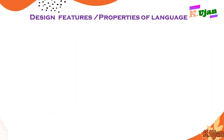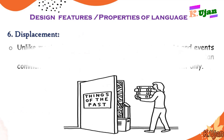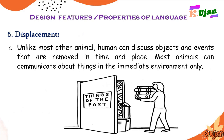The sixth property or design feature of language is displacement. According to Hockett, unlike most other animals, humans can discuss objects and events that are removed in time and place. Most animals can only communicate about things in the immediate environment. Human beings, however, can communicate about the past or future — for example, books are written about past events. This ability is known as displacement.